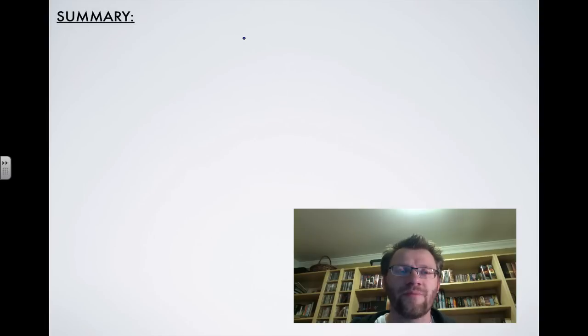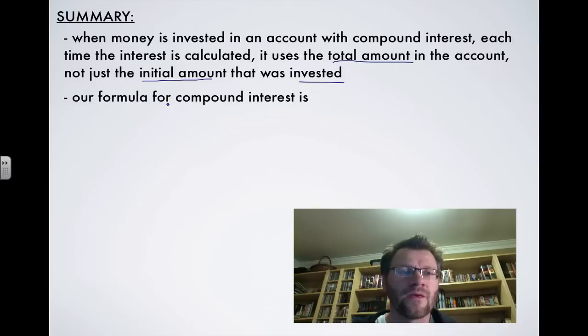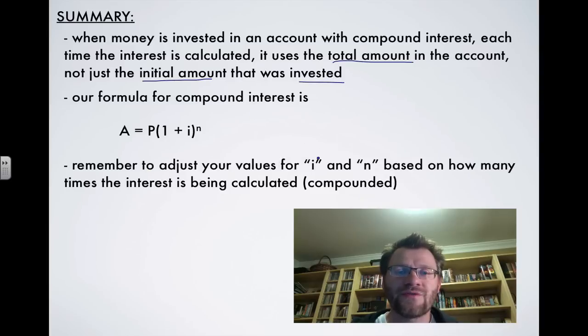So in summary, when money is invested in an account with compound interest, each time the interest is calculated, it uses the total amount in the account, not just the initial amount that was invested. So that's where compound interest is different than simple interest. So our formula for compound interest is A equals P times 1 plus I to the N. And remember that you need to adjust your values for I and N based on how many times the interest is being calculated in that year.